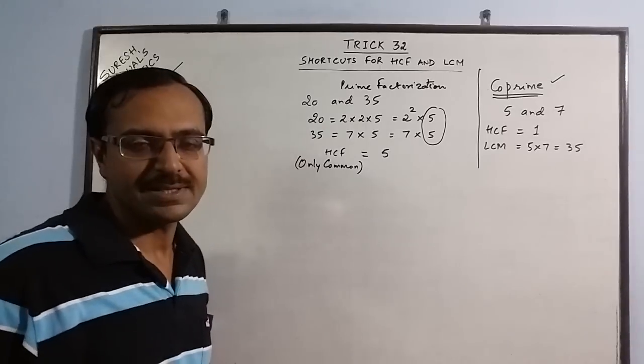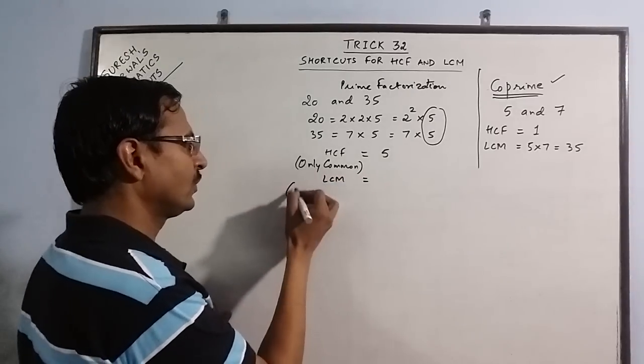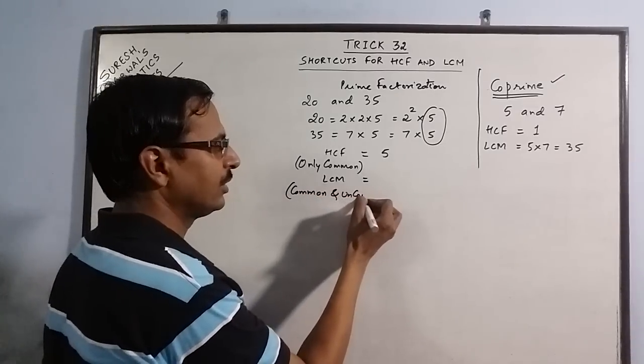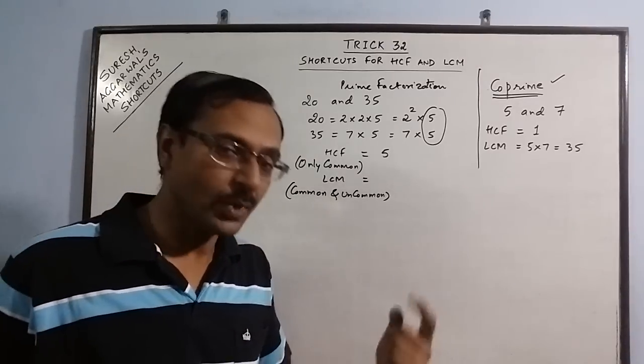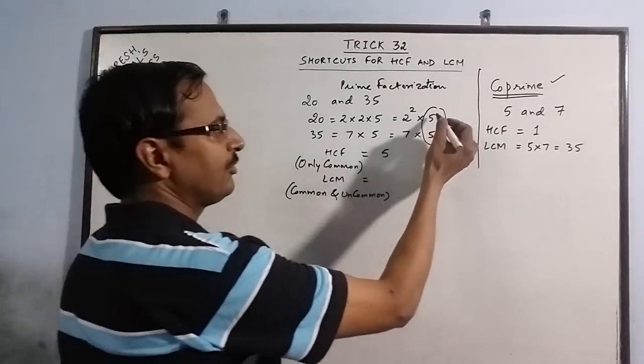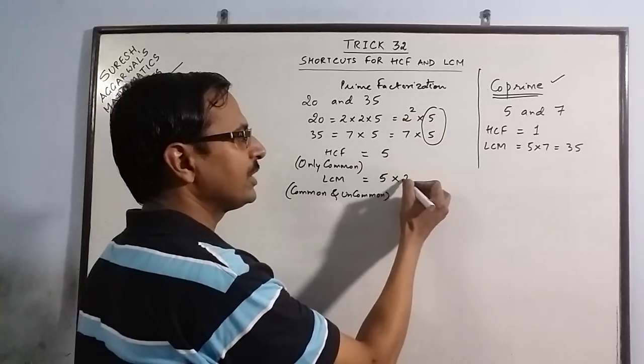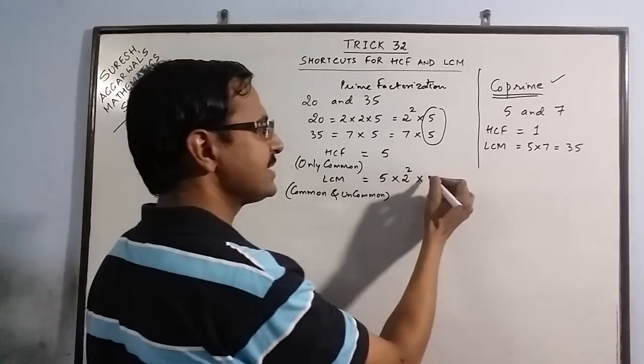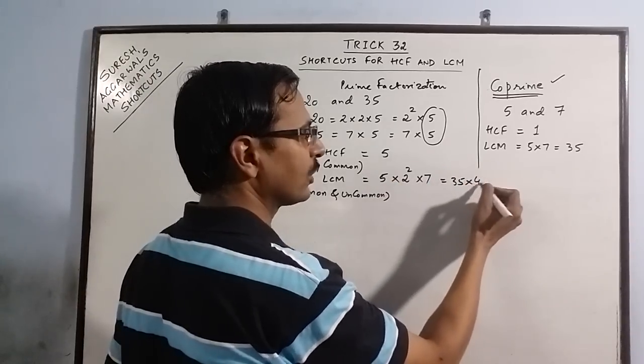So we have 5 as the HCF of these two numbers and LCM will have common and uncommon both factors. We have to write all the common factors once and all the uncommon factors also once. See 5 is common, so we write 5 once. 2 square is not common, so we write 2 square also and 7 is also not common, so we write 7 also. So your answer is 7 by 35 multiplied by 4 that is 140.